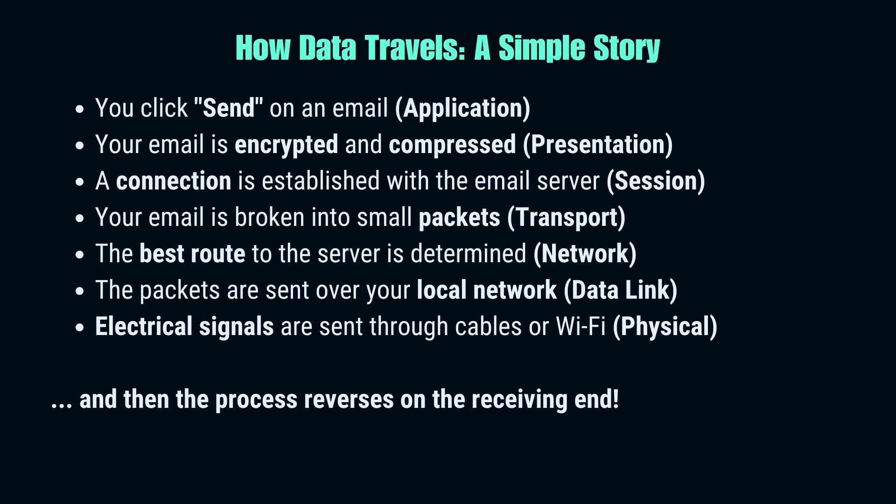Let's tell a quick story about how data travels through these layers. Imagine you're sending an email. Your message starts at the application layer where your email client creates it. It then passes through the presentation layer, which might encrypt it for security. The session layer sets up a communication session, and the transport layer breaks your email into packets. The network layer figures out how to route these packets to your recipient, while the data link layer handles the transfer to your local network devices. Finally, the physical layer converts it all into signals that can be transmitted. This journey happens incredibly fast, and a similar process occurs in reverse when your recipient gets the email.